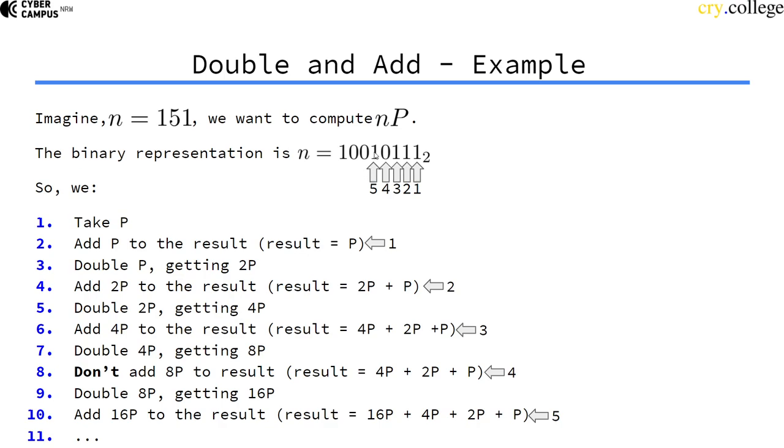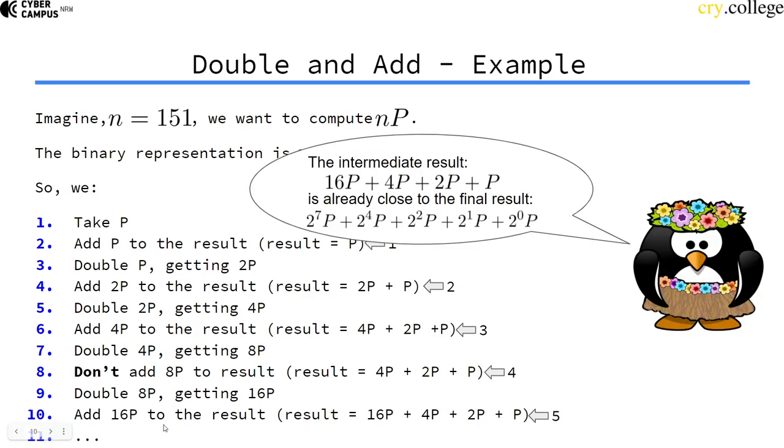This is in the binary representation, so we add it to the result. The result is now 16P plus 4P plus 2P plus P and so on and so forth. The computation is not done but it's already very close to the final result.